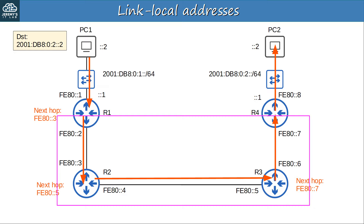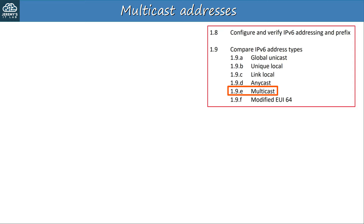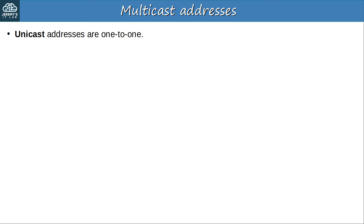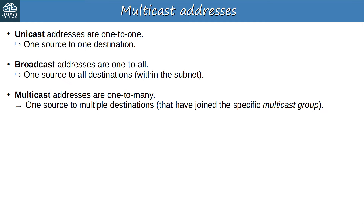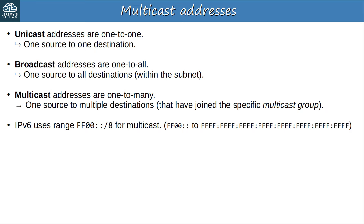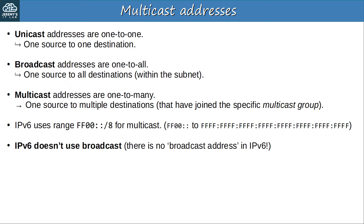Next up, multicast addresses in IPv6 — topic 1.9e. Unicast addresses are used for one-to-one communication. Broadcast addresses are used for one-to-all communication within a subnet. Multicast addresses are used for one-to-many communication — from one source to multiple destinations that have joined the specific multicast group. IPv6 uses the range ff00::/8 for multicast. Importantly, IPv6 doesn't use broadcast — there is no broadcast address in IPv6 — but you can send a message to all hosts in the subnet using a specific multicast address.